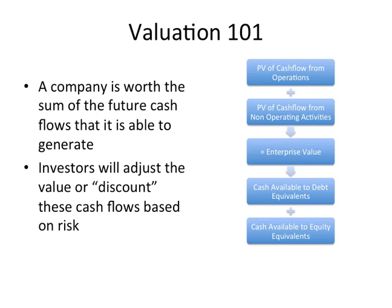This is a graphical representation of the Modigliani-Miller model, introduced in last week's video. The general idea is that a company's worth is the sum of its future cash flows, broken into operating cash flows and non-operating cash flows. When we add those two together, that equals the enterprise value of the firm, which can be paid out to the debt and equity holders.